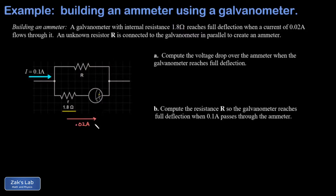To use a galvanometer as an ammeter you connect it in parallel with a resistance that's designed to control the deflection on that galvanometer. In part b, we want to compute that resistance required to make it so we get full deflection on the galvanometer when there's 0.1 amps passing through this ammeter circuit. We'll back up and start with part a.